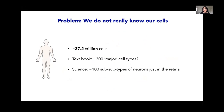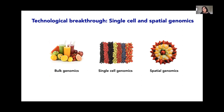All cells in our body have the same DNA. If we have a variant in our genome that increases disease risk, all cells carry this variant, but disease only manifests in those tissues and cells where the gene is really active and expressed. Knowing the cells is essential for understanding disease-causing genes. There are 37.2 trillion cells in the human body.